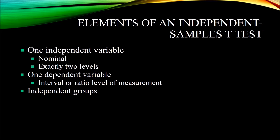Another element of the independent samples t-test is that we need one — and only one — dependent variable, and it must be measured at the interval or ratio level of measurement. The interval level of measurement means that between each observation there is equal distance. For example, the Fahrenheit scale: the difference between 70 and 71 degrees is the same as the difference between 95 and 96 degrees. However, with interval level measurement, zero on the scale doesn't represent a true absence of the construct — zero degrees Fahrenheit doesn't represent an absence of heat. A ratio level of measurement is the same as interval except the zero is a true zero; for example, a weight of zero pounds represents an absence of weight.